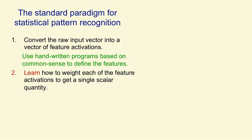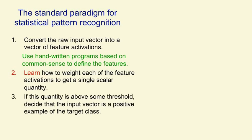What we learn is how to weight each of the feature activations in order to get a single scalar quantity. The weights on the features represent how much evidence each feature gives in favour of or against the hypothesis that the current input is an example of the kind of pattern you want to recognise. When we add up all the weighted features, we get a total evidence in favour of the hypothesis, and if that evidence is above some threshold, we decide the input vector is a positive example of the class. A perceptron is a particular example of a statistical pattern recognition system.